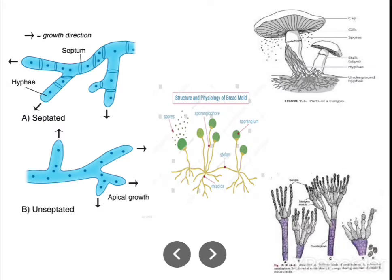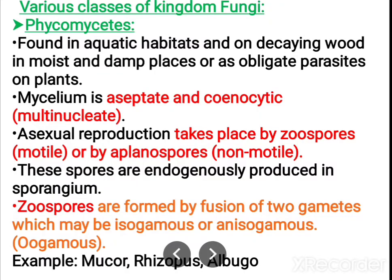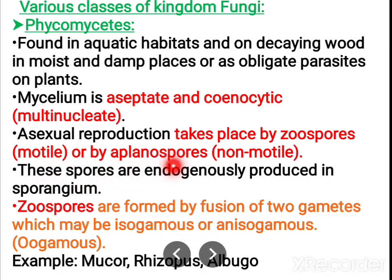Aseptate means they do not have any septum inside — there is no distinction of cells. When there is no division of cells, the mycelium is called aseptate. It is also called coenocytic — that is, multi-nucleate — where within a single filament you can see more than one nucleus since there is no separation of cells. Asexual reproduction takes place by the formation of zoospores, which are motile, or by aplanospores, which are non-motile. The spores are formed endogenously and produced in a sporangium.